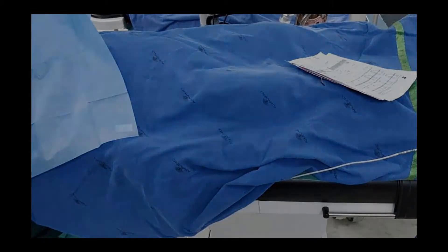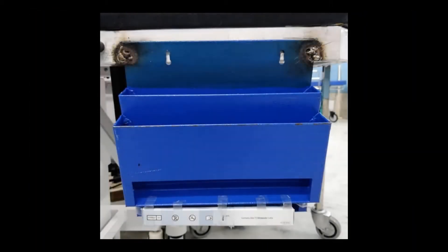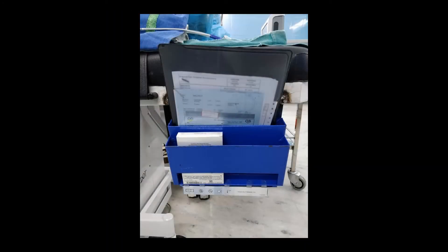Clutter-Free OT Table. OT tables often get messy by patient's case sheets lying on them. A clutter-free OT table can be achieved by fixing a simple side tray to it for keeping the case sheets and IOL.